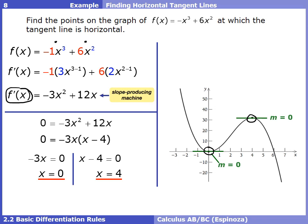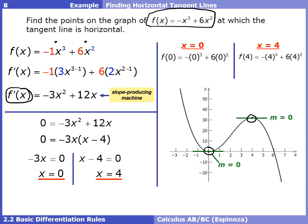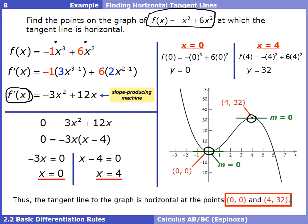But the problem asks for the points, not just the x values. We plug each x into the original function. When x equals 0: y equals 0. When x equals 4: y equals negative 64 plus 96 equals 32. Thus the tangent line to the graph is horizontal at the points (0, 0) and (4, 32).